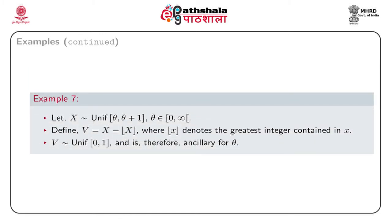Next we consider a very interesting example due to Basu. Let x be a random variable with PDF f_θ(x) = 1 if θ ≤ x < θ+1, where θ ≥ 0. Define v = x − ⌊x⌋, where ⌊x⌋ denotes the greatest integer contained in x. Then it can be shown that v has a Rectangular(0,1) distribution. Since the distribution of v is independent of θ, v is an ancillary statistic for θ.